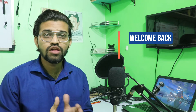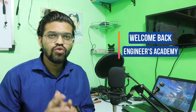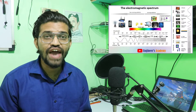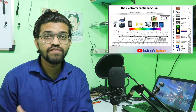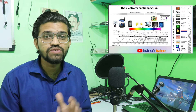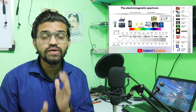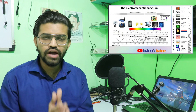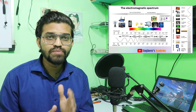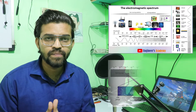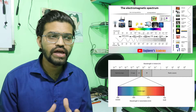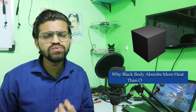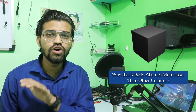Hi everyone, welcome back to another video of Engineers Academy. In the last video we learned about the electromagnetic spectrum — different wavelengths of light from radio waves up to gamma waves. In this video we are going to talk about only the visible light and a certain phenomenon: why does a black body absorb more heat than a white body?